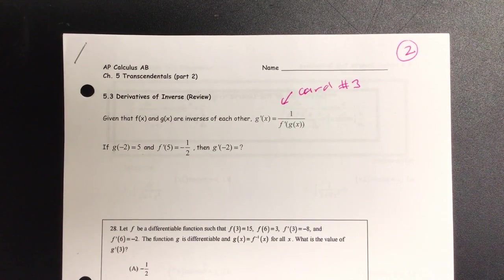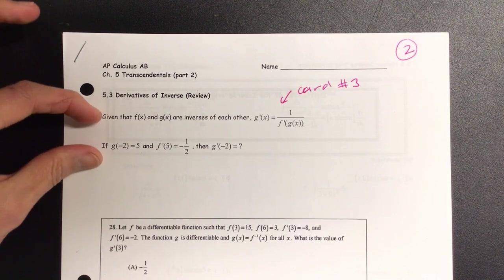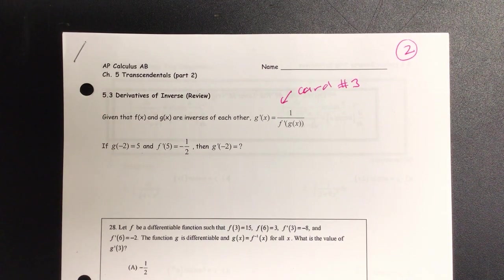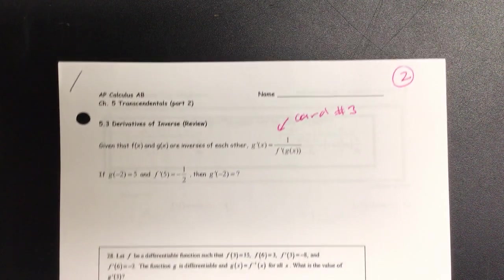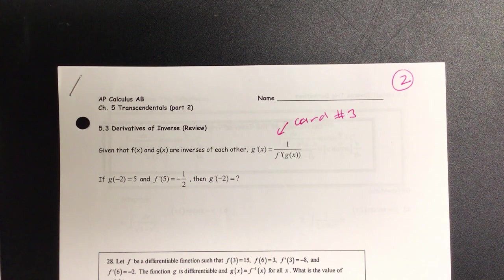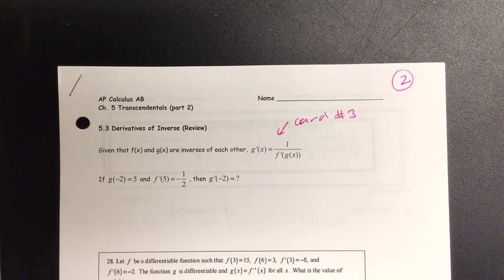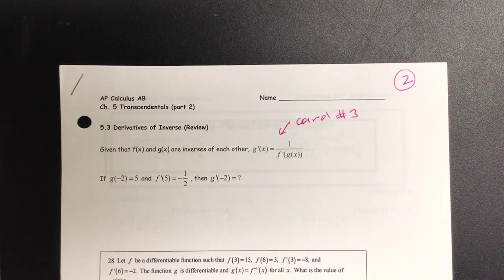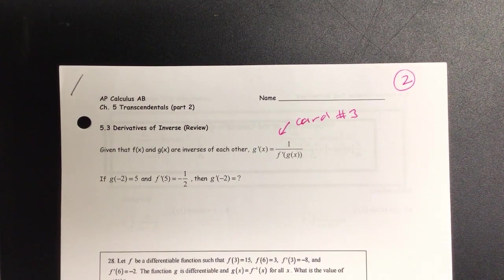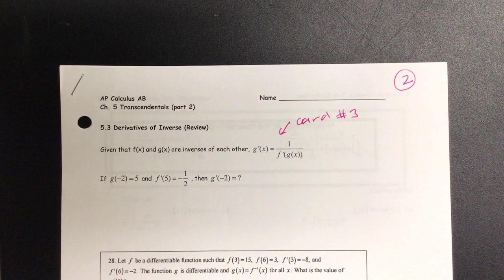Okay Sam, let's go ahead and read the given and the if. f(x) and g(x) are inverses of each other. g'(x) equals 1 over f'(g(x)). If g(-2) equals 5 and f'(5) is negative 1 and a half, then g'(-2) is 1 and a half.